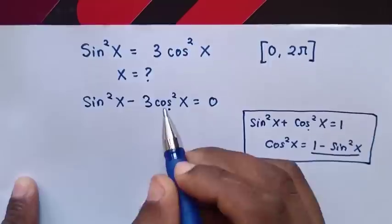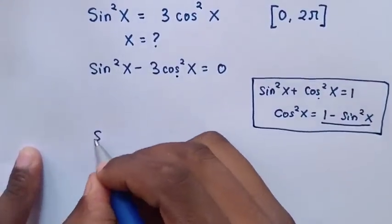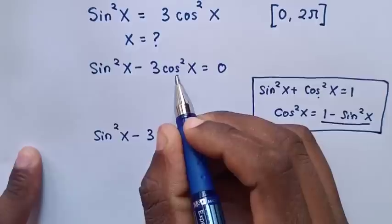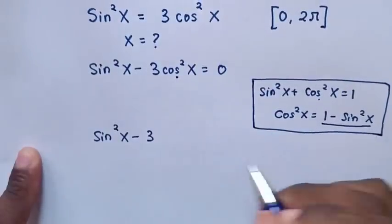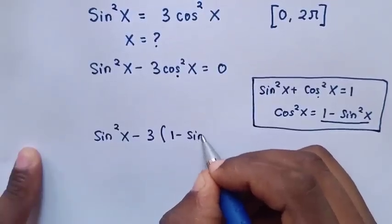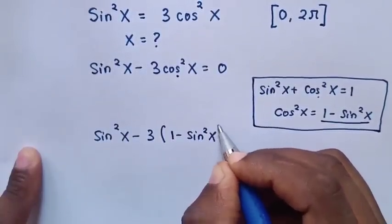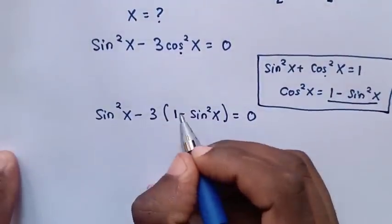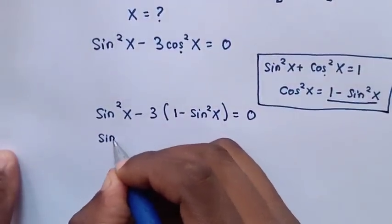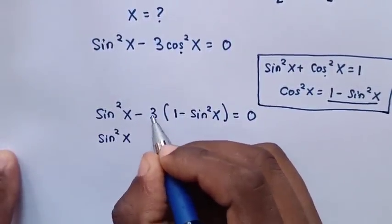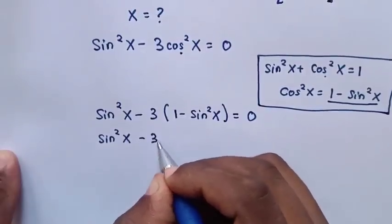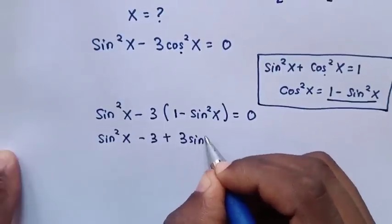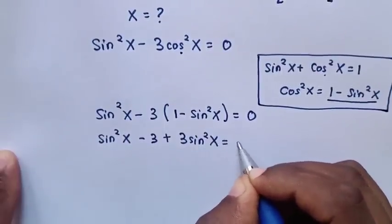In our equation it will be sin squared x minus 3, and for cos squared x we substitute bracket 1 minus sin squared x, equals 0. Then we multiply negative 3 inside the bracket: negative 3 times 1 is negative 3, and negative 3 times negative sin squared x is positive 3 sin squared x, equals 0.